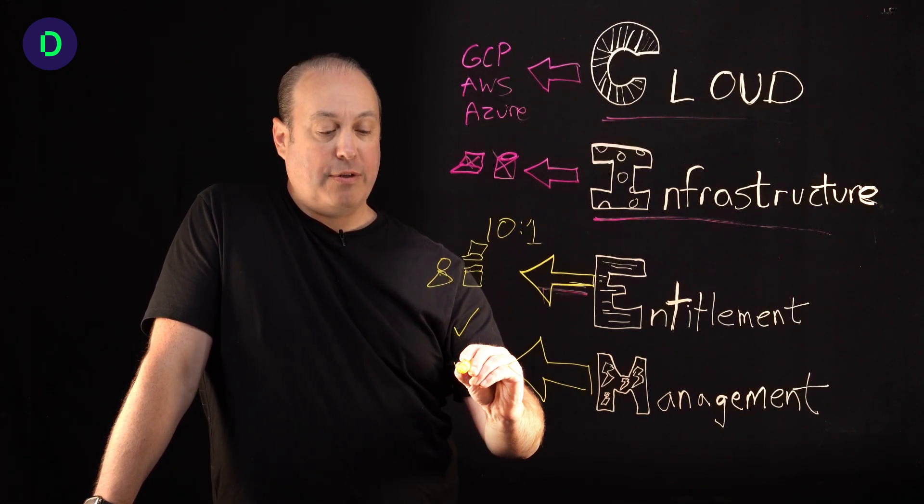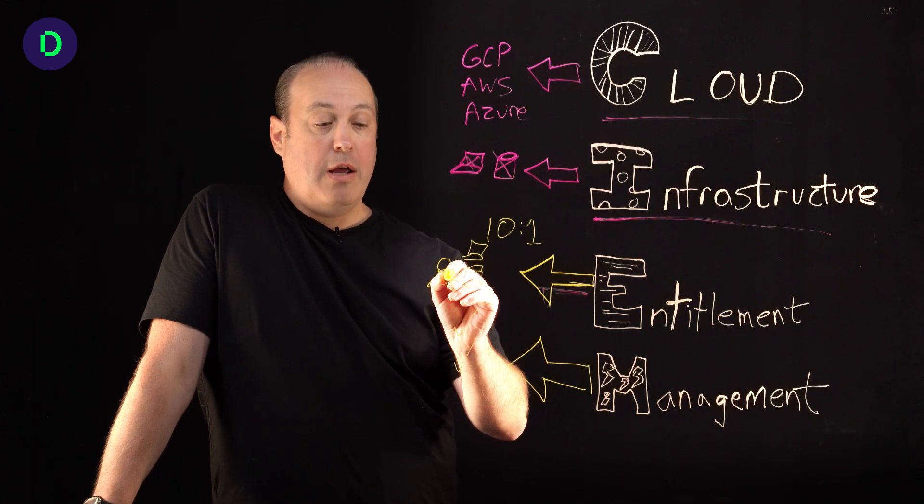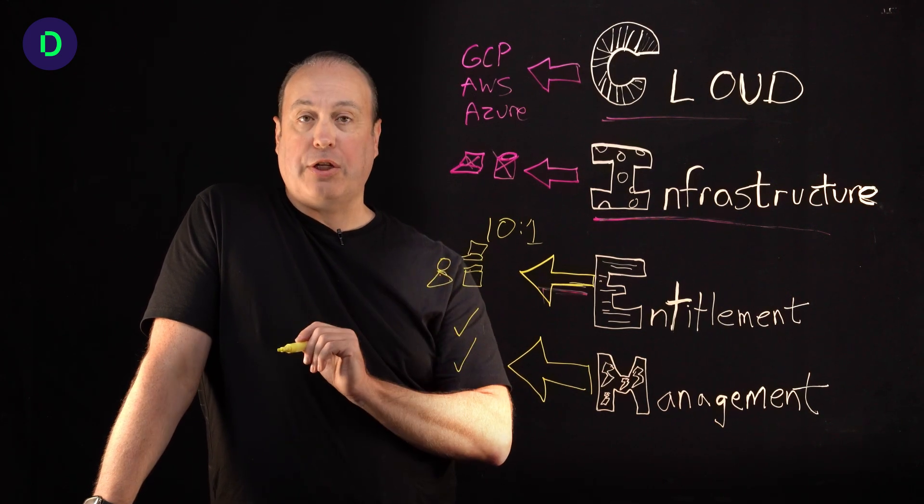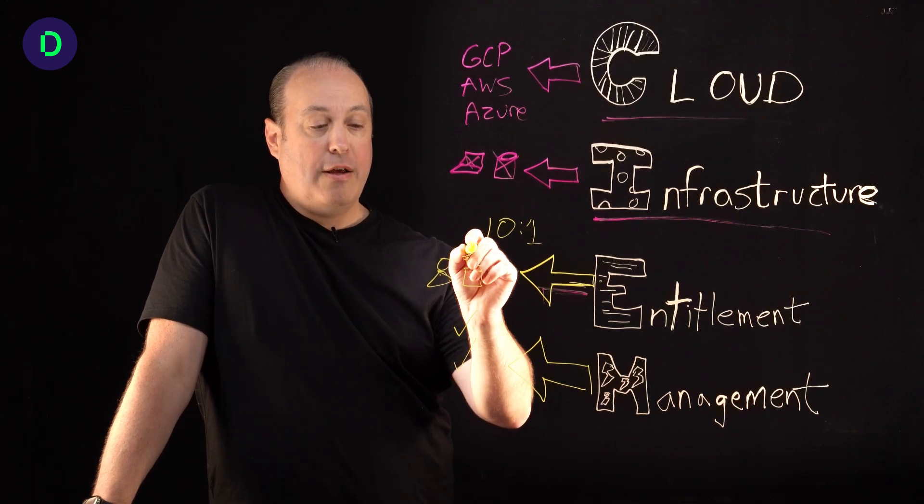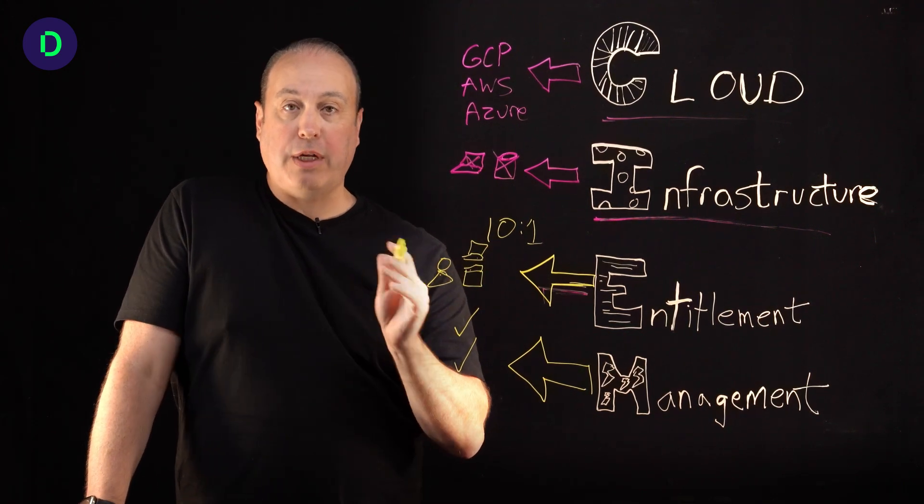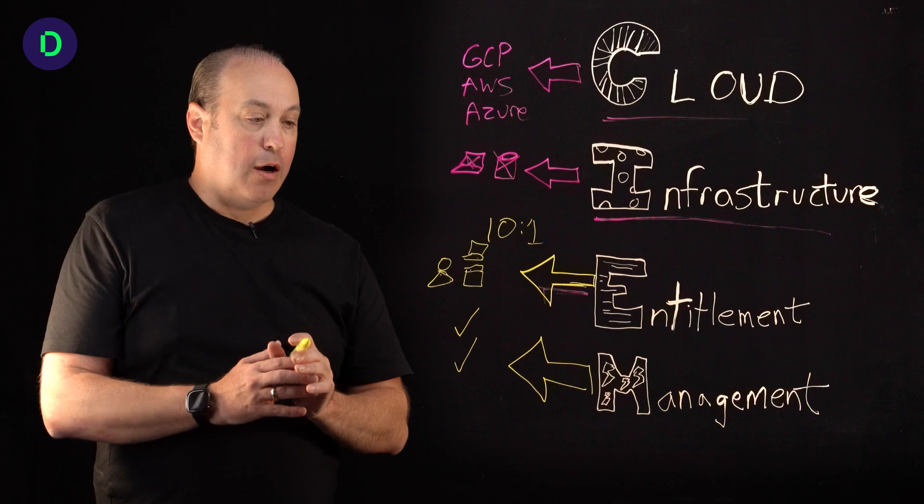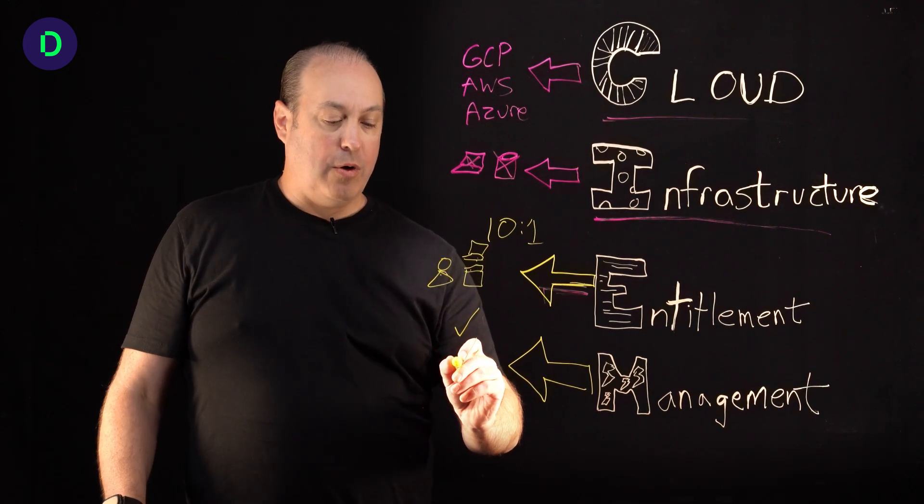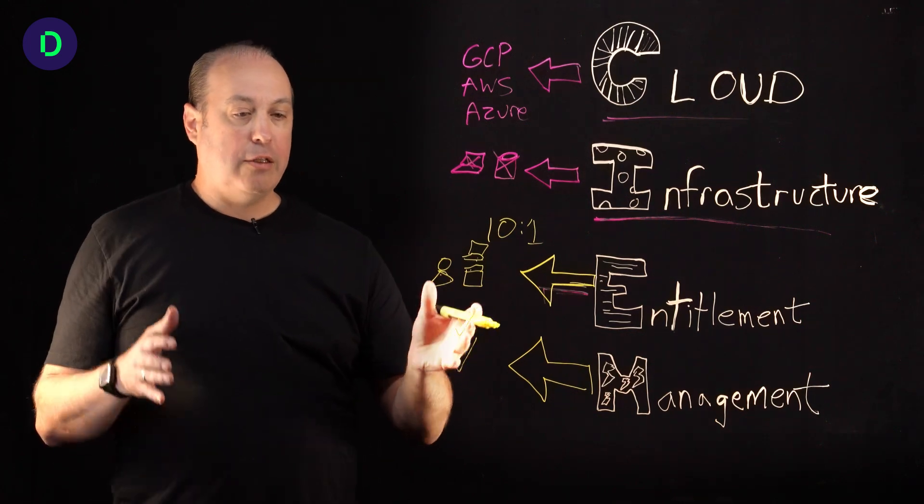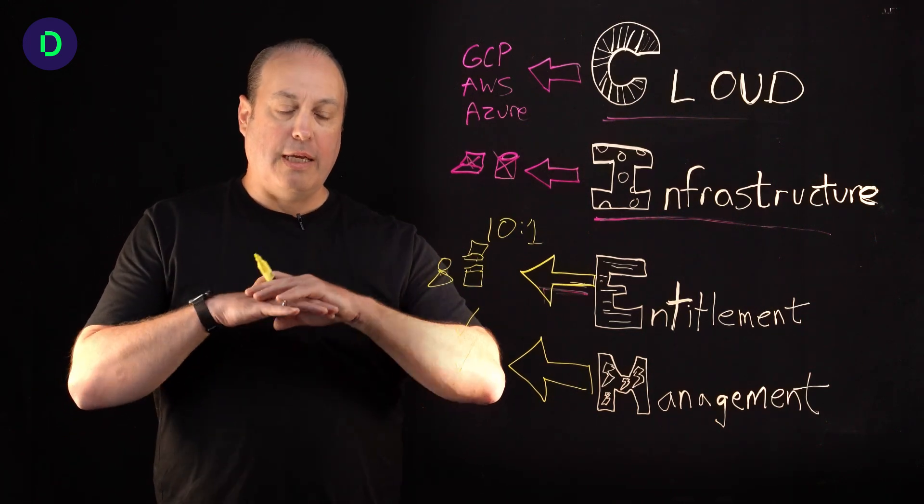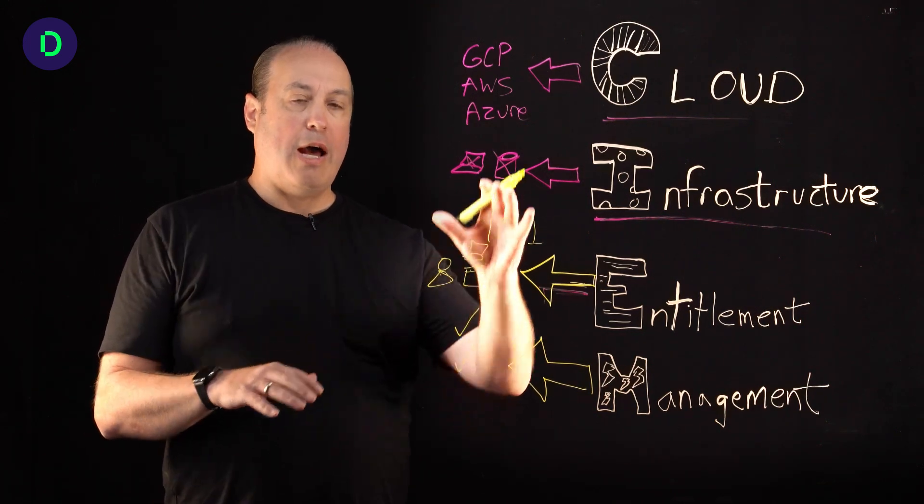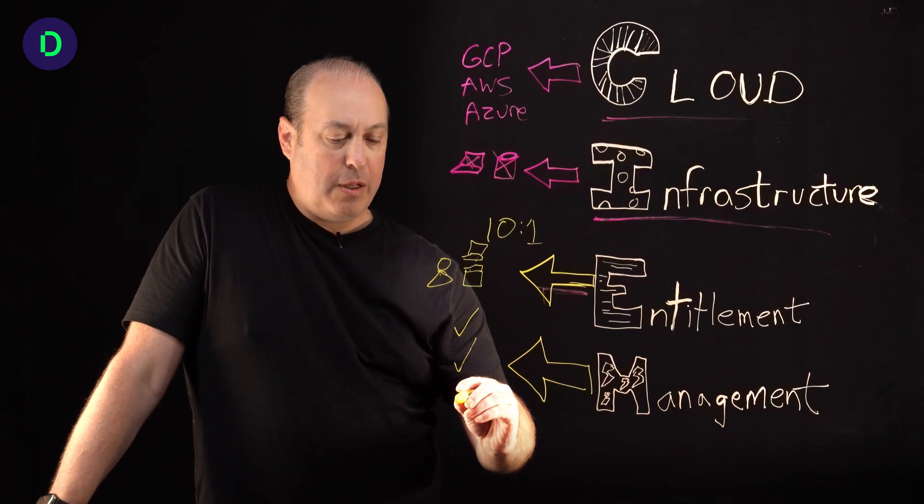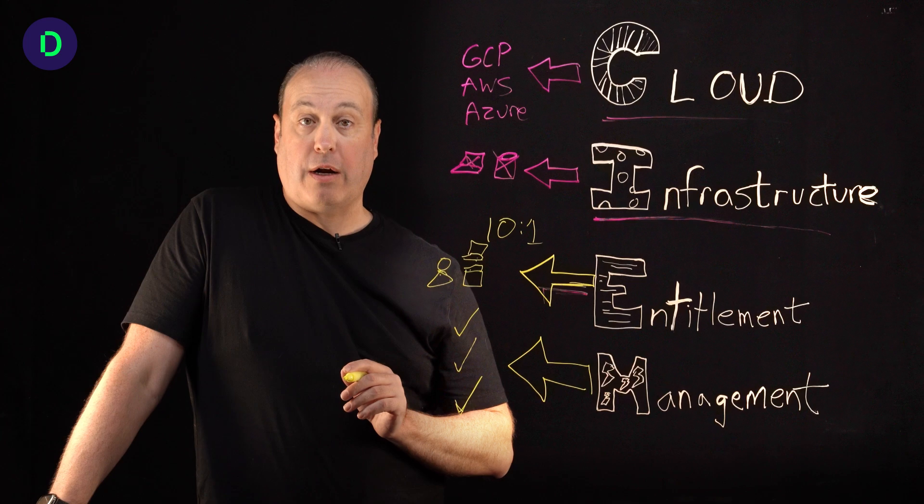At the same time, you're able to find misconfigurations. Misconfigurations are: does this user have multi-factor authentication? Have the keys on this server been rotated recently? Are they properly vaulted and secured? So you're able to find those misconfigurations and lower the attack surface that you have in your cloud.